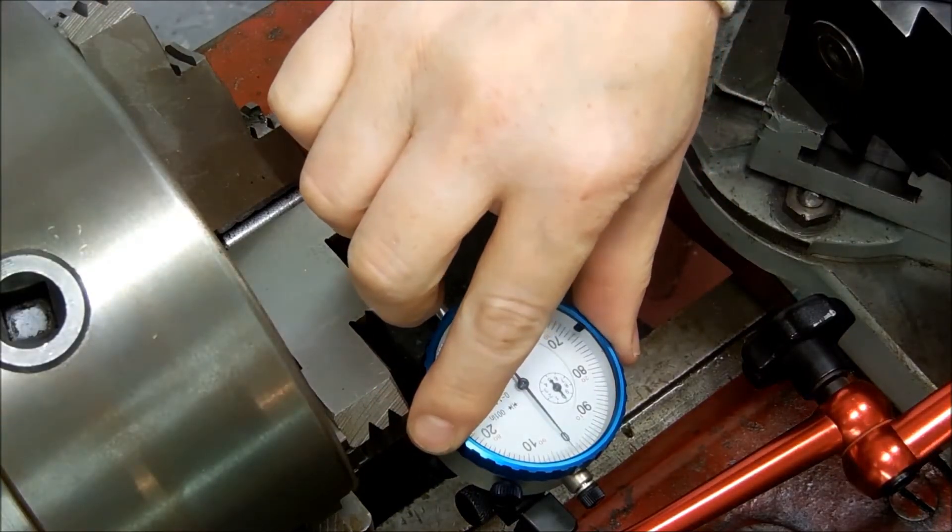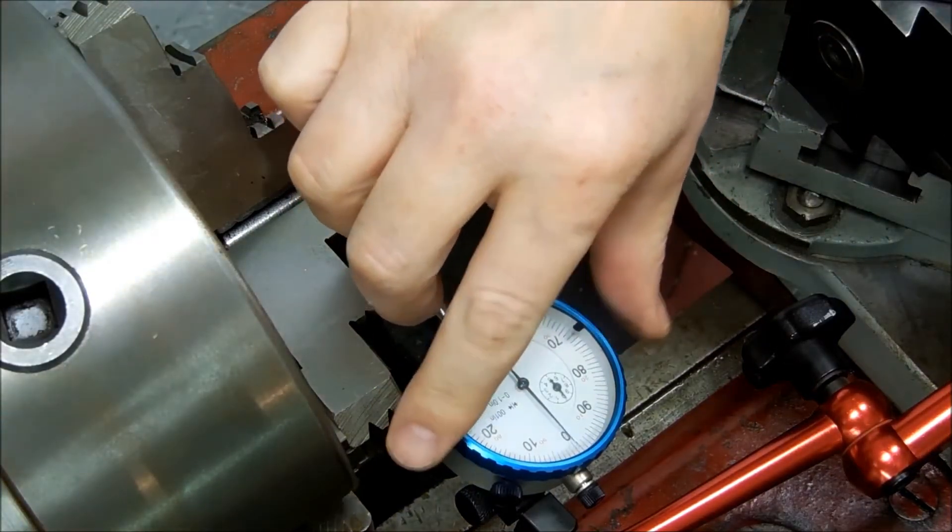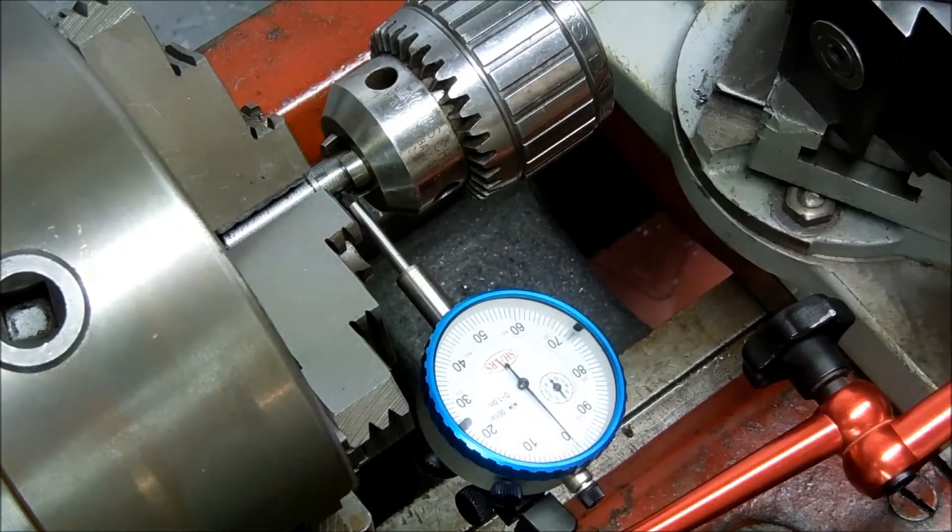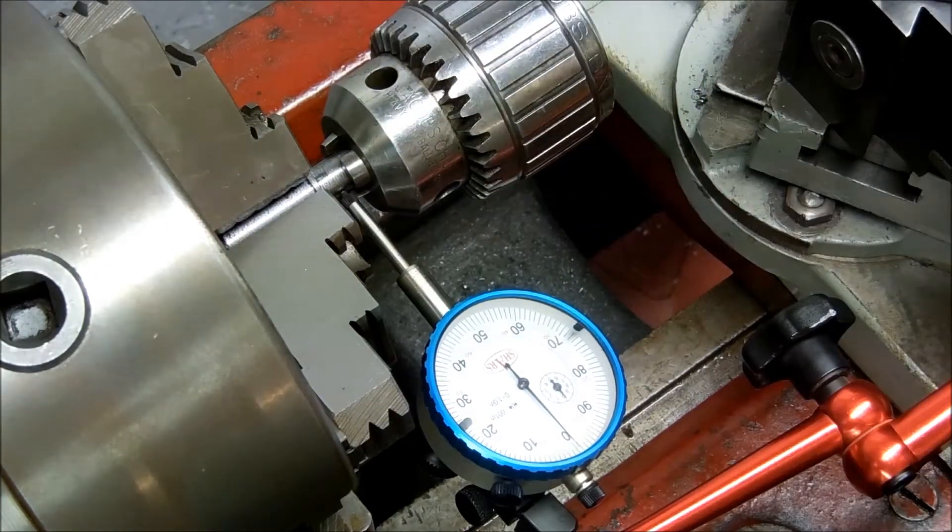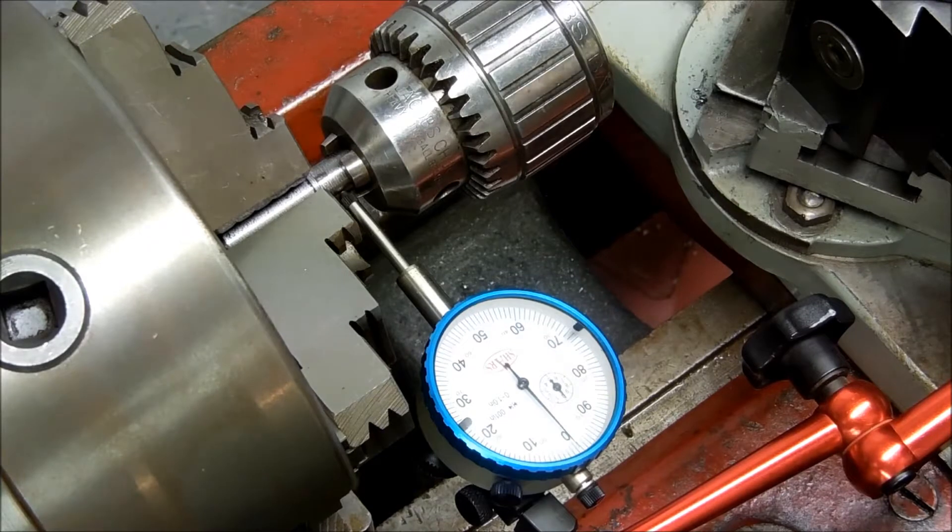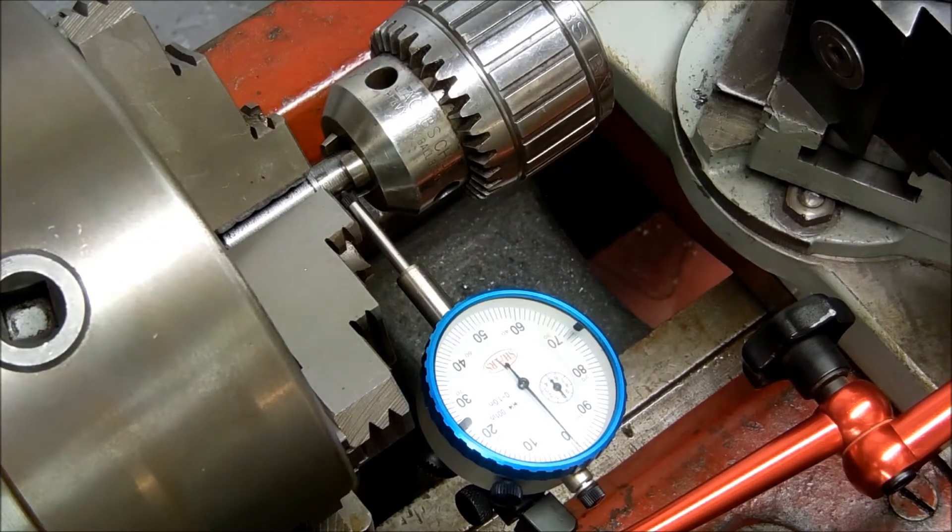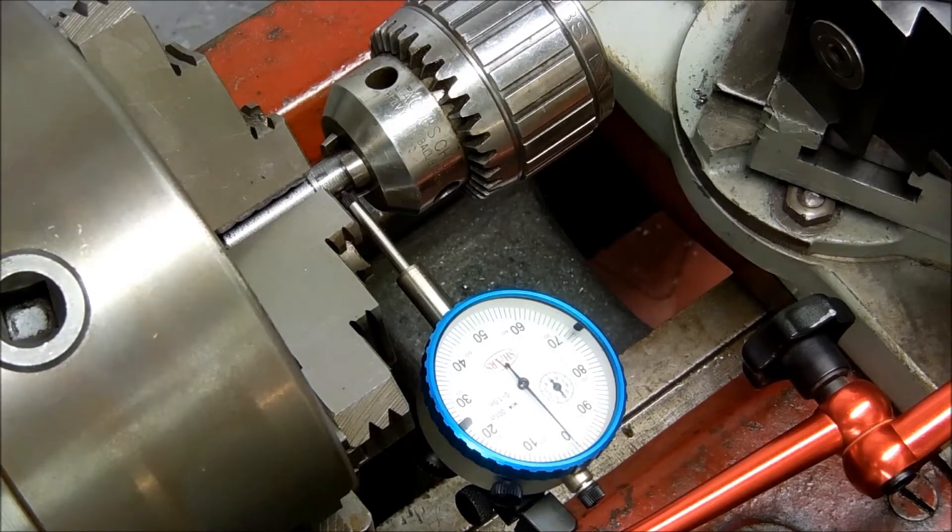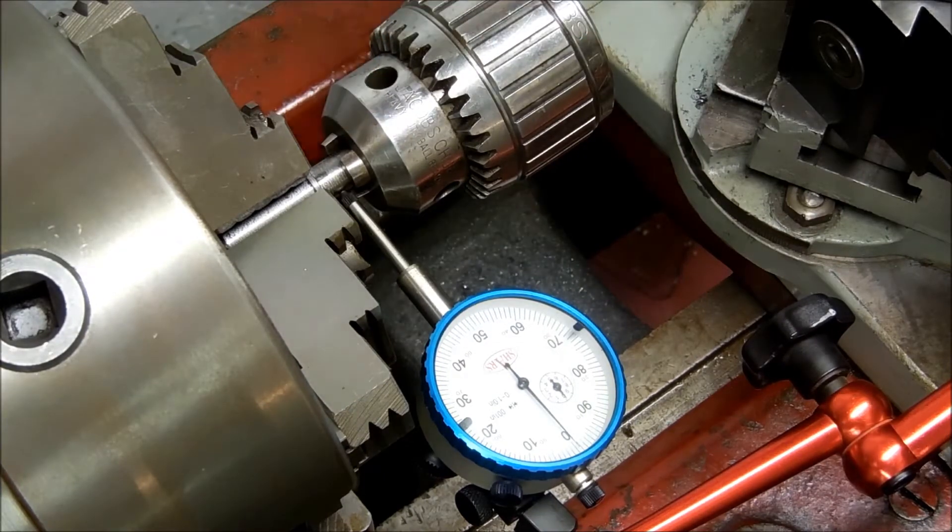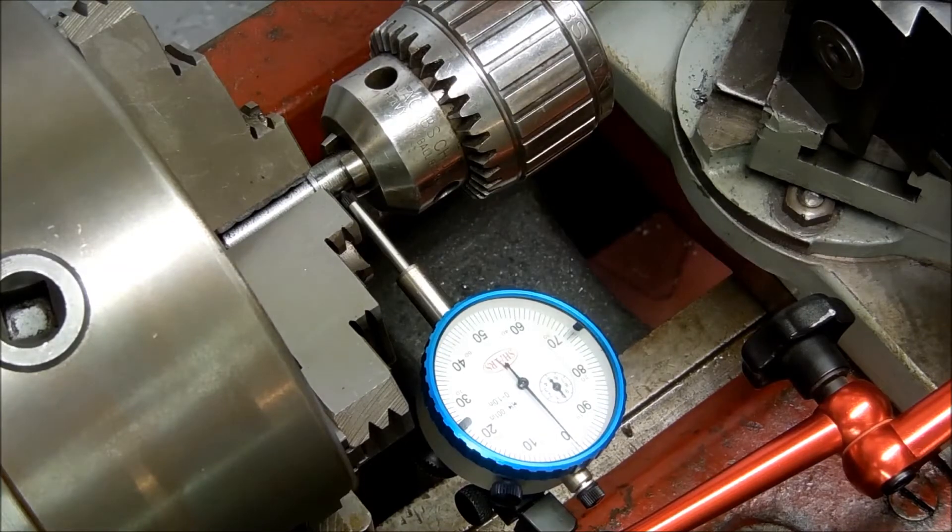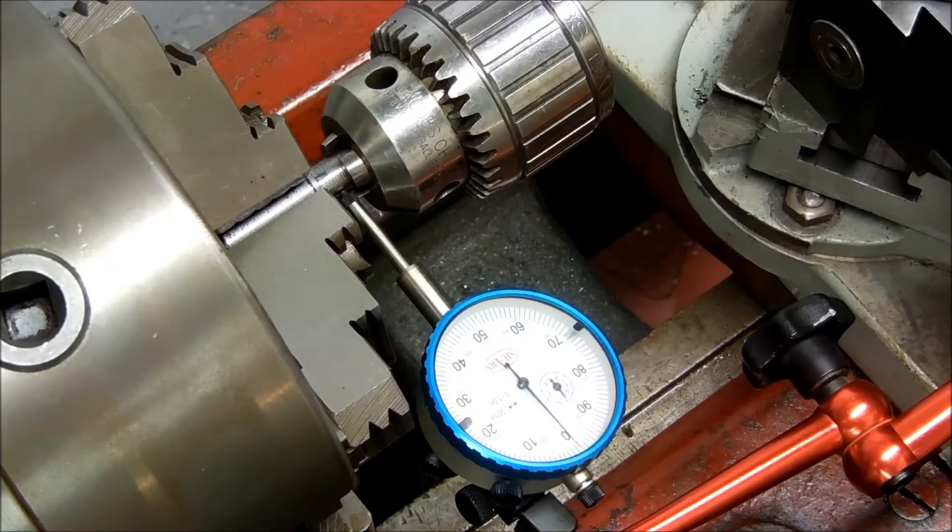All right, just testing the runout on this little mandrel I have. It's about three-eighths inch diameter, and I think it's actually too narrow. I'm getting some deflection in that when I'm boring, as well as in the boring bar itself.